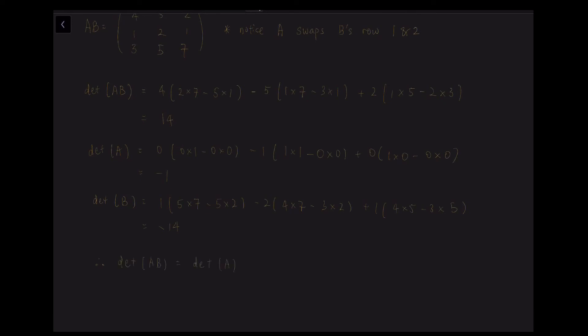Hence, we can conclude the properties that the determinant of AB is equal to the determinant of A times the determinant of B. And also, by swapping two rows of matrix B, we found that the determinant of matrix B is equal to the negative of its matrix after swapping the two rows.